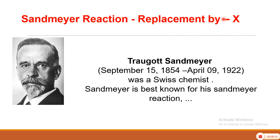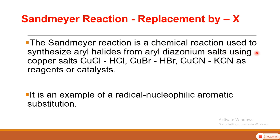Next is the Sandmeyer reaction — also a replacement reaction where we replace the N₂Cl group by halogen or cyanide. This methodology was suggested by Traugott Sandmeyer (15 September 1854 – 9 April 1922), a Swiss chemist. The Sandmeyer reaction is a chemical reaction used to synthesize aryl halides from aryl diazonium salts. In this reaction we use copper salts: CuCl/HCl for replacement by Cl, CuBr/HBr for replacement by Br, and CuCN/KCN for replacement by cyanide.